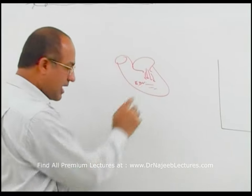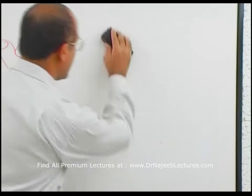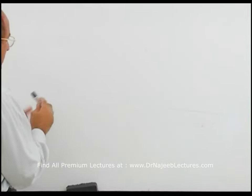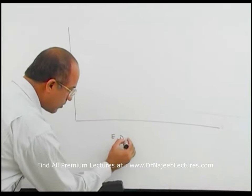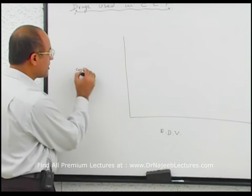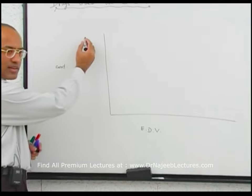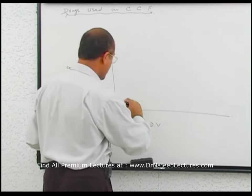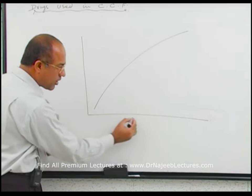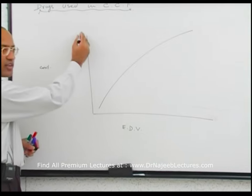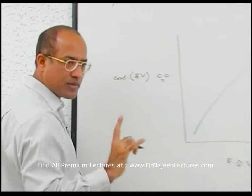If you put end-diastolic volume on the x-axis and contractility on the y-axis, when end-diastolic volume increases, contractility increases. This is the normal curve of a healthy heart — whenever end-diastolic volume is progressively increased, cardiac output or contractility is progressively increased. Contractility can be measured by stroke volume or cardiac output.